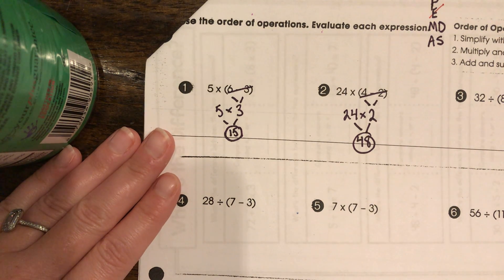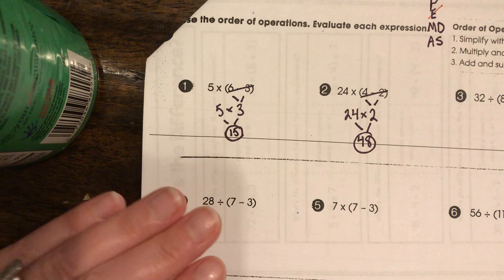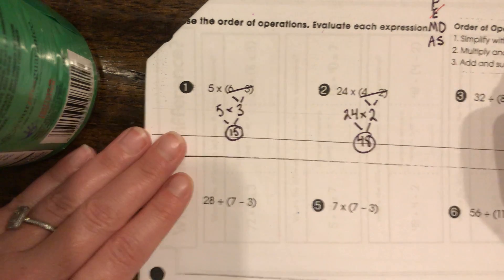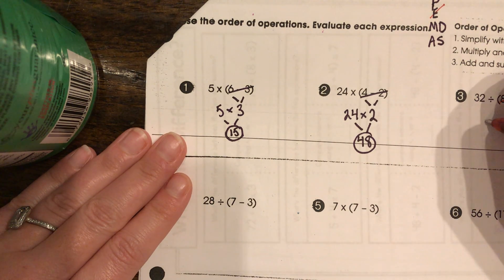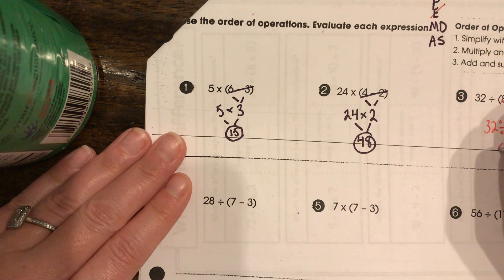Here we are, always, always, always with the parentheses first. Eight minus four is four, cross that out, and then 32 divided by four is eight.